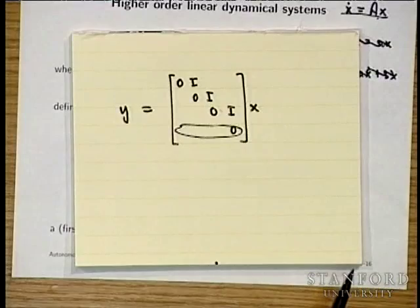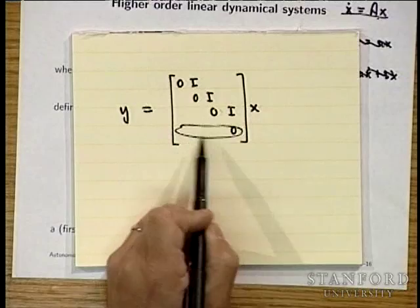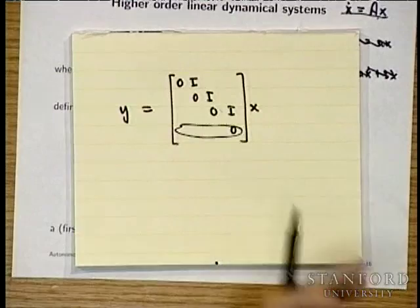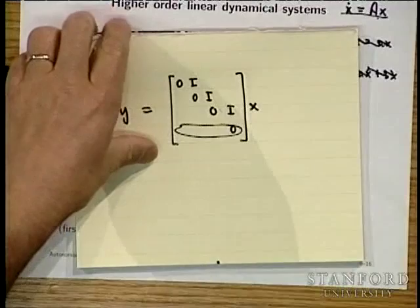The block diagram of z-dot equals A-big times z reveals a chain of integrators: each block integrates the signal once, giving x integrated once, twice, three times, and so on, with a linear combination fed back to the input. This looks like what signal processing calls an IIR direct form filter.